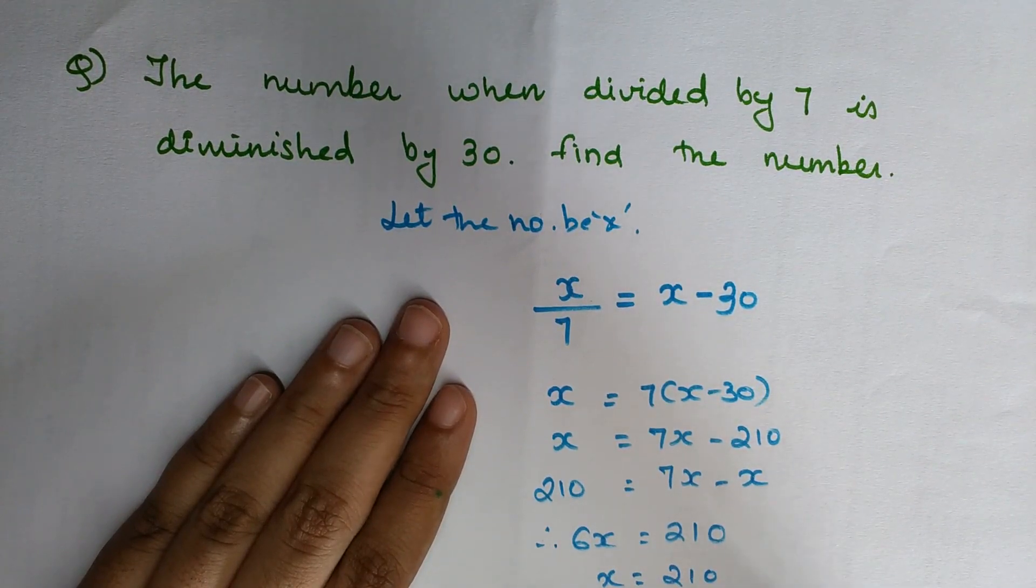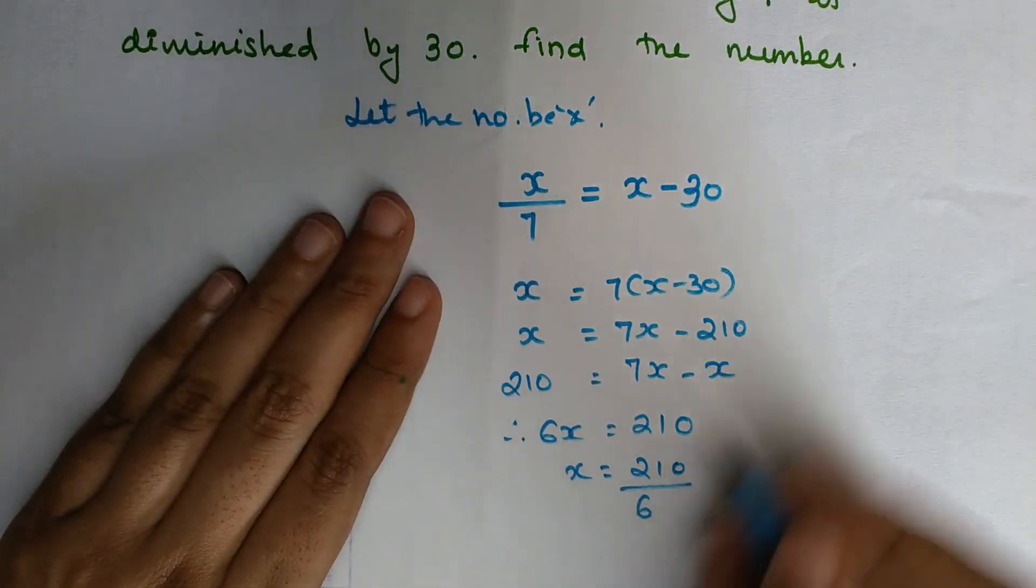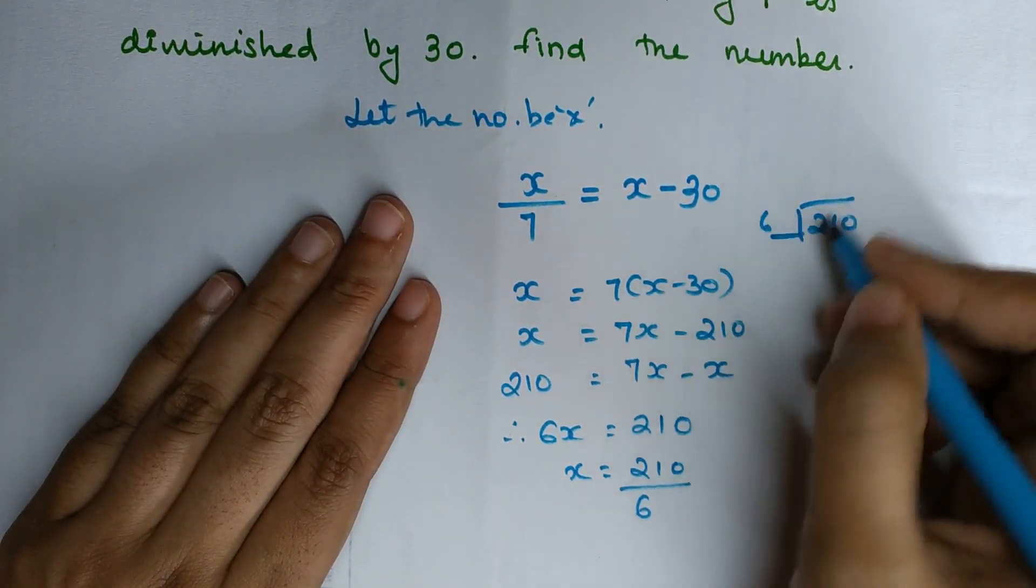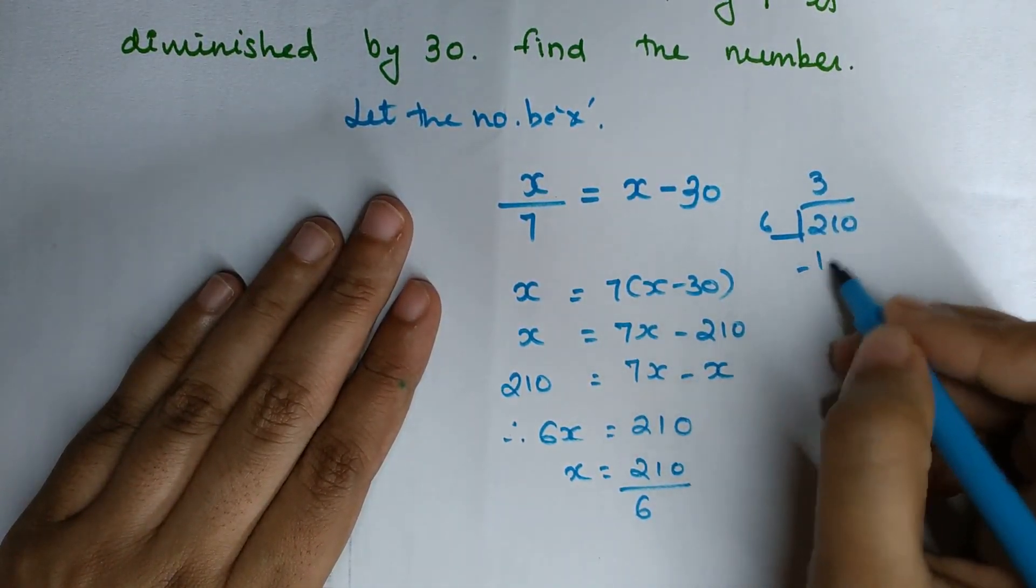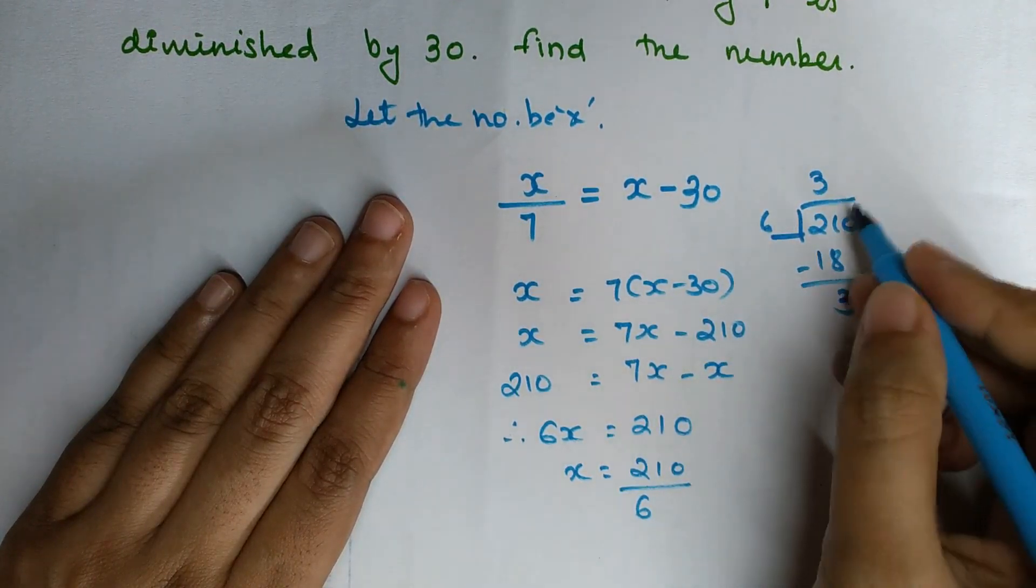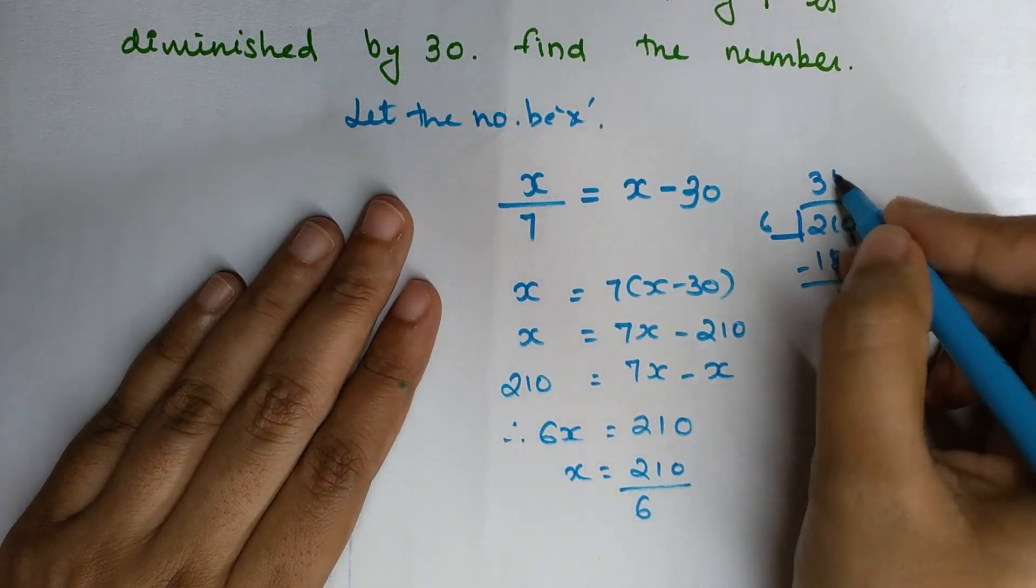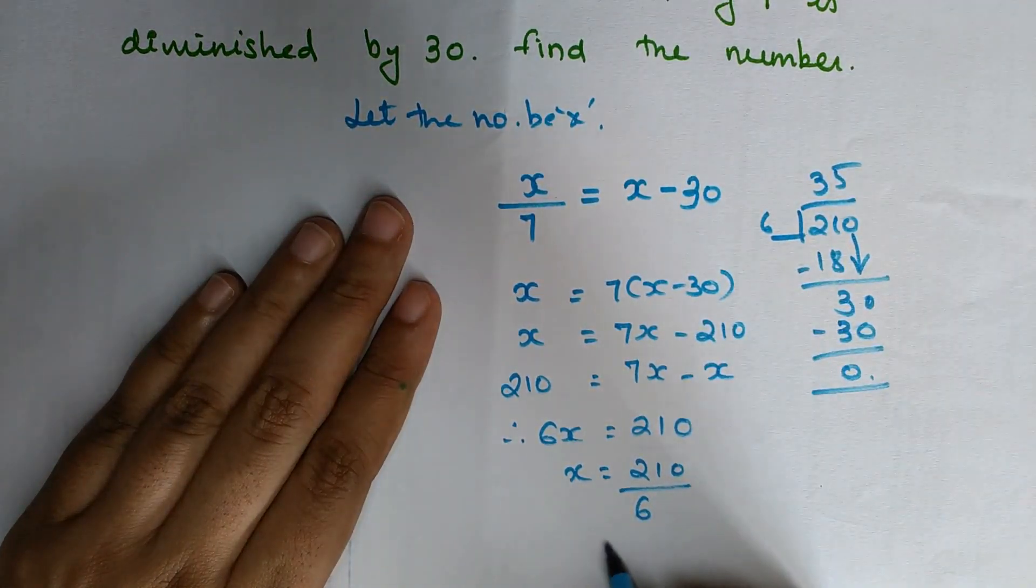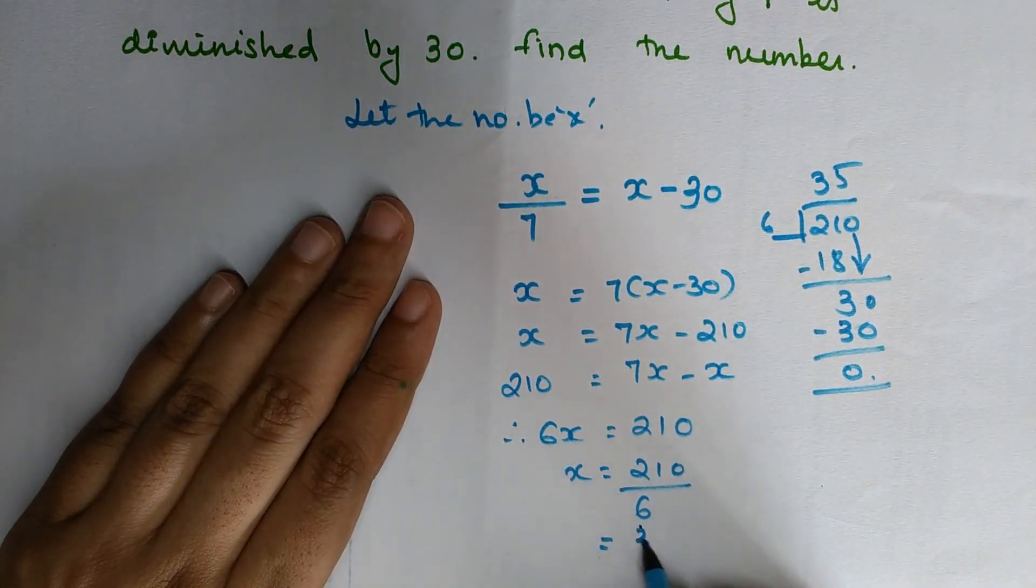...you get x = 210/6. Let's do the division: 210 and 6, 6 threes are 18, you're left with 3, bringing the 0 down, 6 fives are 30. So the value of x is 35.